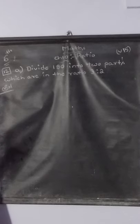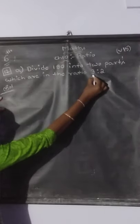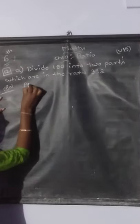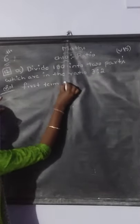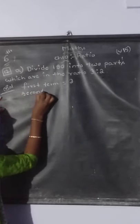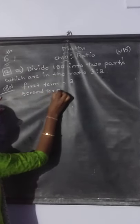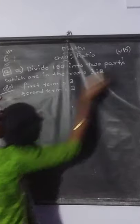They have given the ratio and they have given some total number — that is the sum. We should divide it into 2 parts which are in the ratio 3 is to 2. In this ratio, the first term is 3 and the second term is 2. We should find both the parts.